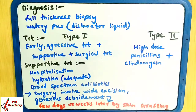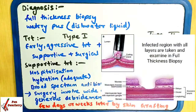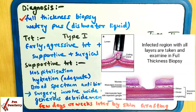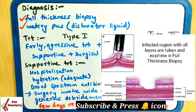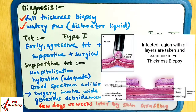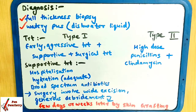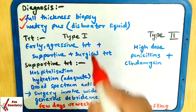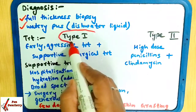How do we make the diagnosis? We take a full-thickness biopsy of the affected area — a proper biopsy of the full thickness of that area. If it shows watery pus — a dishwater liquid type appearance — then we confirm the diagnosis.